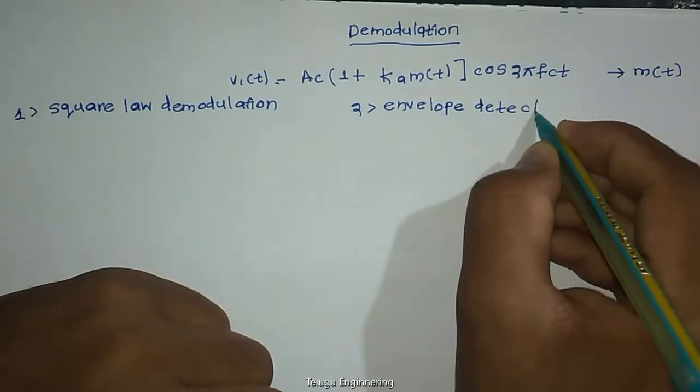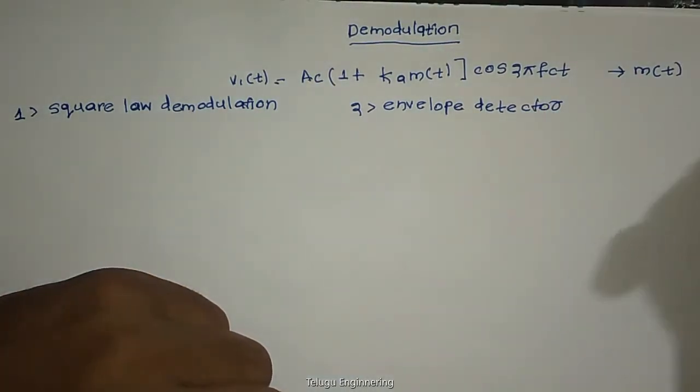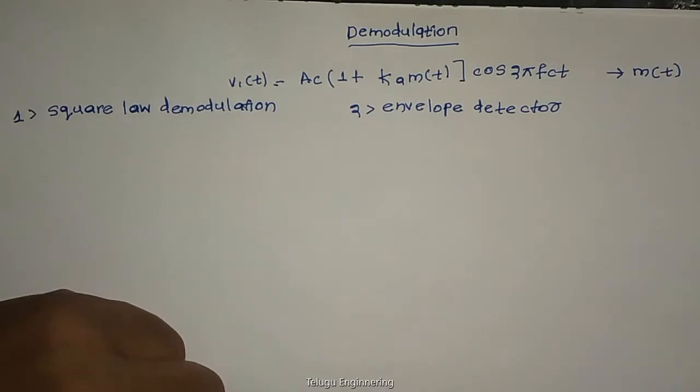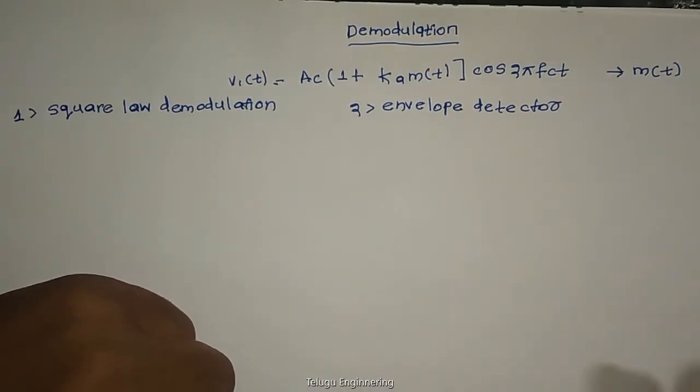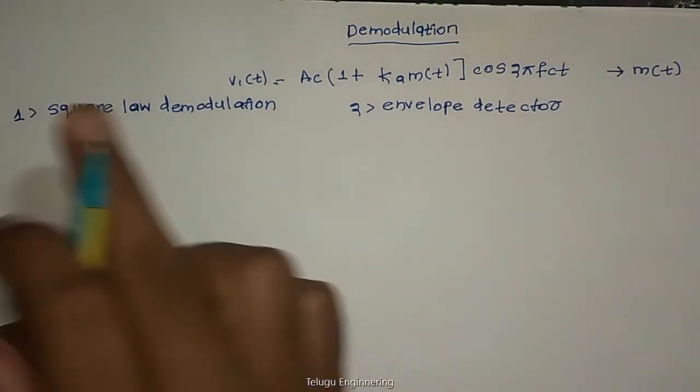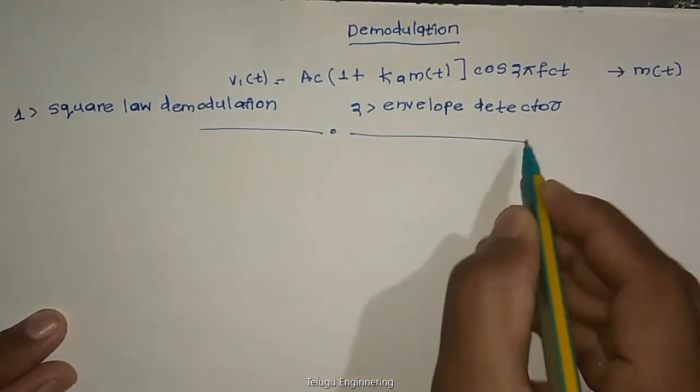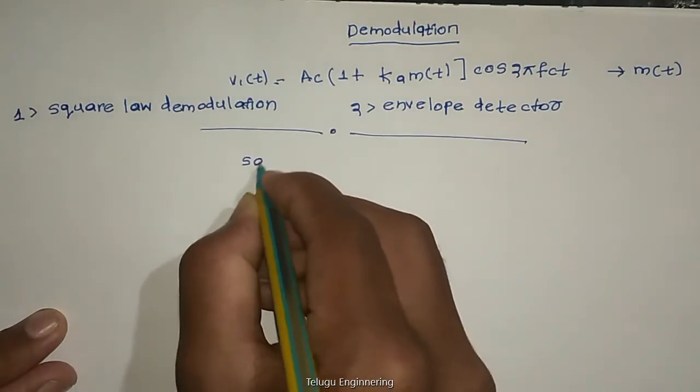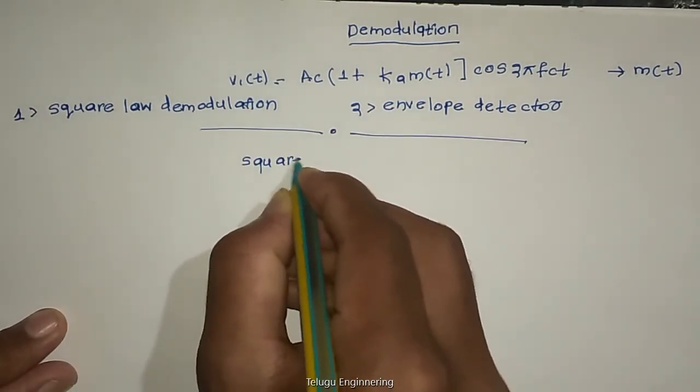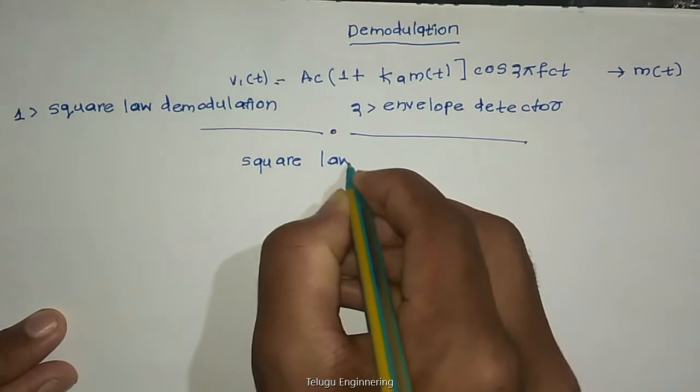With the detector, we are detecting the original AM wave and extracting the information from that wave. So, first one is square law demodulation. We are looking at square law demodulation. It is very simple.